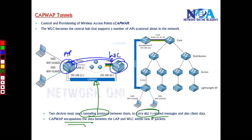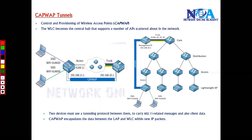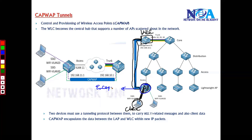A wireless client connects to the access point, which already has a CAPWAP tunnel established with the WLC. The access point encapsulates all the user traffic inside this CAPWAP tunnel and sends it to the WLC. Once the traffic reaches the WLC, the WLC removes the CAPWAP encapsulation.